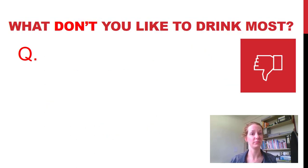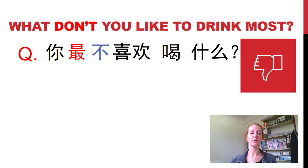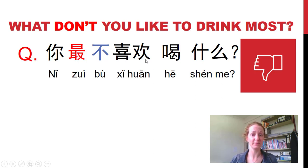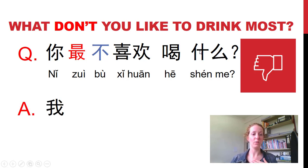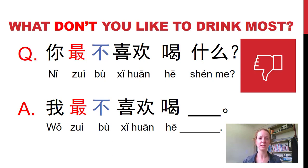What don't you most like to drink? It's a little awkward in English, but here we go. 你不喜欢喝什么? — that's what do you not like to drink. But for 'most not like to drink,' we put 最 before 不: 你最不喜欢喝什么? And to answer, take out the question word and change to 我: 我最不喜欢喝... For example, 我最不喜欢喝可乐.